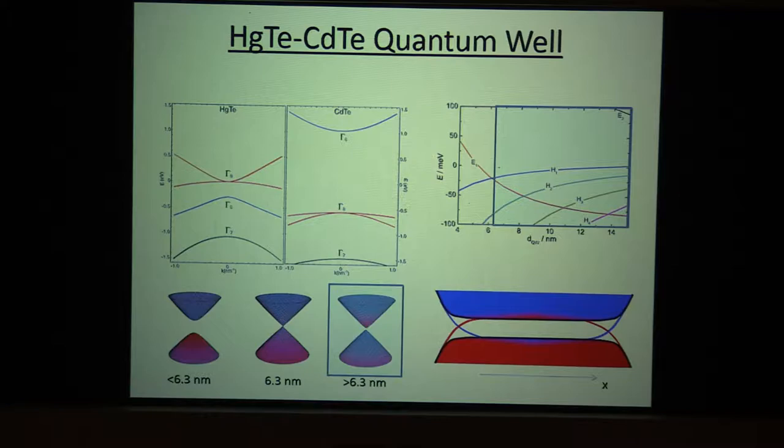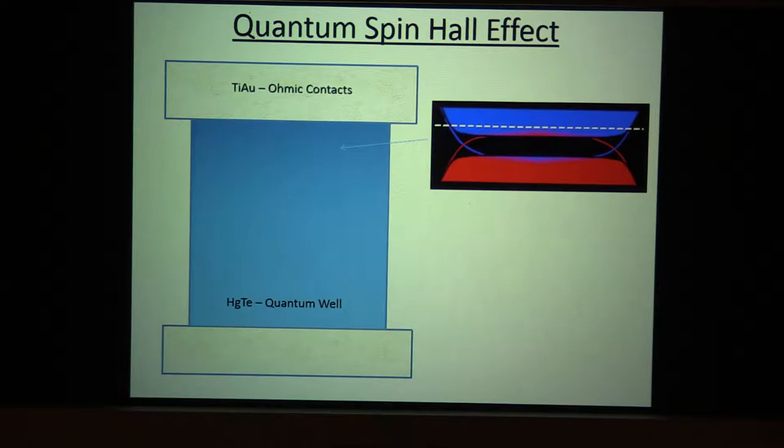And once the bands have inverted, we have in the boundaries of this sample topological protected edge states, and given that the system is two-dimensional, these edge states are one-dimensional, and these are these helical edge states that I mentioned in the introduction.